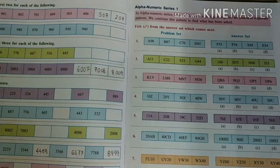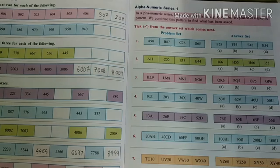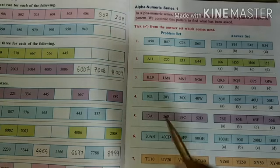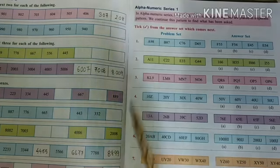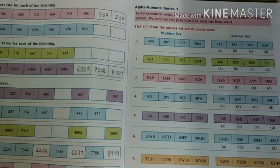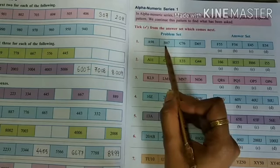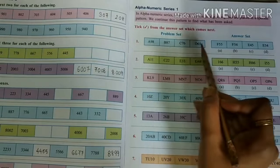Now let's learn the alpha numeric series. In an alpha-numeric series, letters and numbers or digits together are placed in a specific pattern. We continue this pattern to find what has been asked. In the problem set, each box has one alphabet and two digits: A 98, then B 87, then C 76, then D 65.